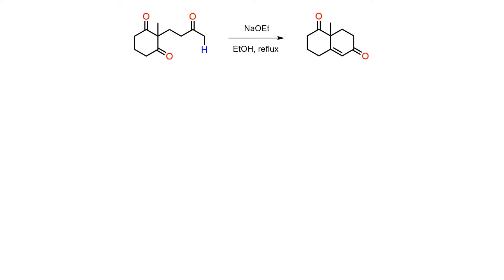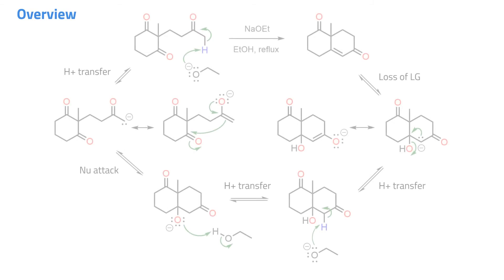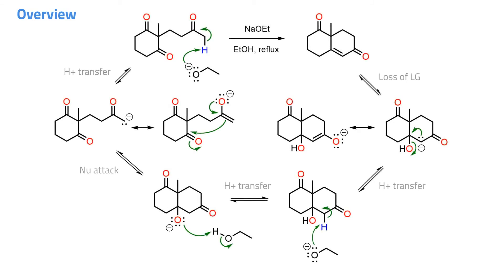The Robinson annulation is an intramolecular aldol condensation in which a polyketone precursor is treated with base to affect cyclization through nucleophilic addition of an enolate nucleophile. The reaction is often heated to force elimination to the enone, which is usually the product isolated from this process, although the polyketone precursor has multiple alpha protons that may be removed.